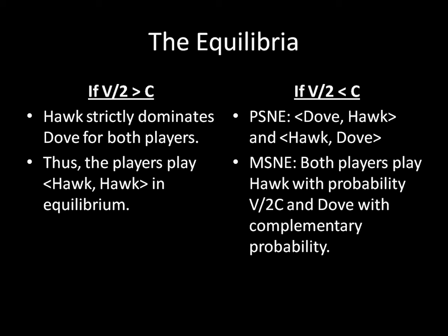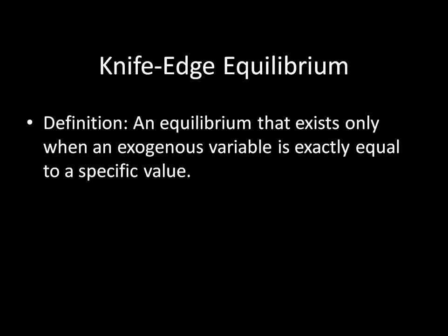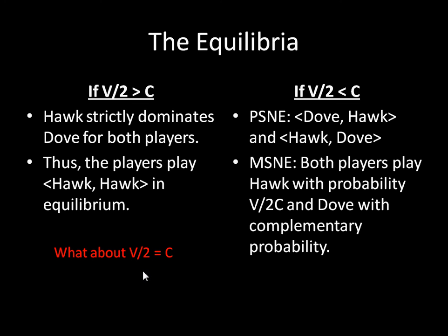If you were paying close attention, you would have noticed that I left a case conspicuously absent. We have V over 2 less than C, we have V over 2 greater than C — we don't have what happens when V over 2 equals exactly C. Why didn't I solve for that? It seems a little pertinent, doesn't it? Well, the answer is that we actually don't really care about this. This is what's called a knife-edge condition, and whatever equilibrium would come out of this would be a knife-edge equilibrium. We can define a knife-edge equilibrium as an equilibrium that exists only when an exogenous variable is exactly equal to a specific value. For this knife-edge condition to occur, we would have to have V over 2 exactly equal to C.